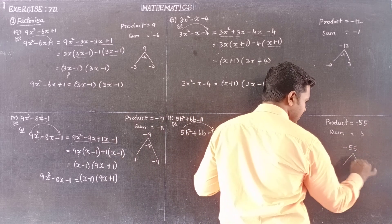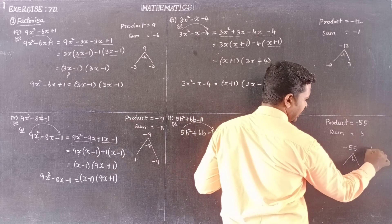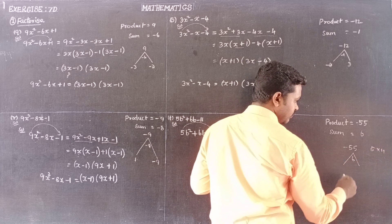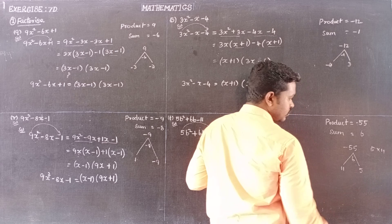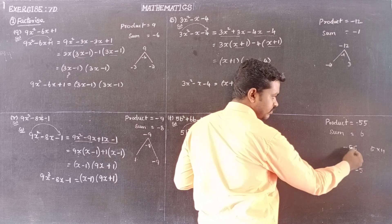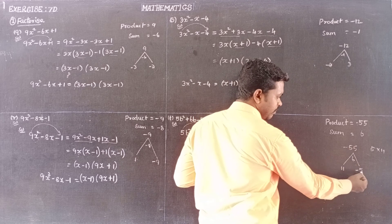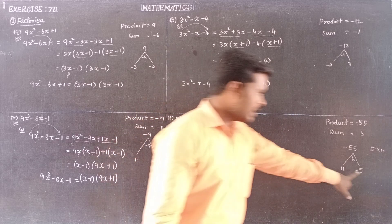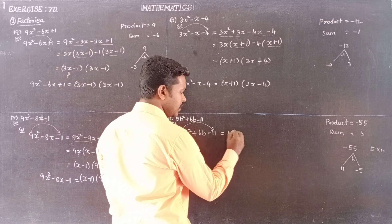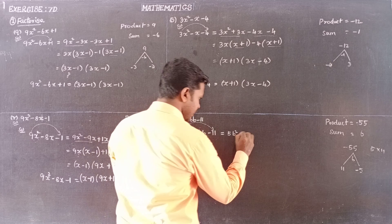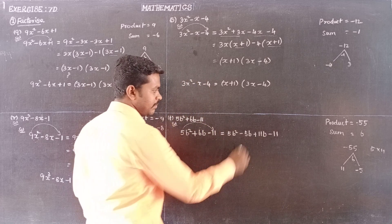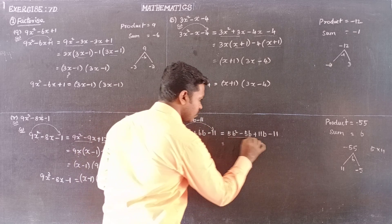The two numbers that multiply to minus 55 and add to plus 6 are minus 5 and plus 11: minus 5 times 11 is minus 55, and 11 minus 5 is plus 6. So we split the middle term into minus 5b plus 11b, giving 5b squared minus 5b plus 11b minus 11.